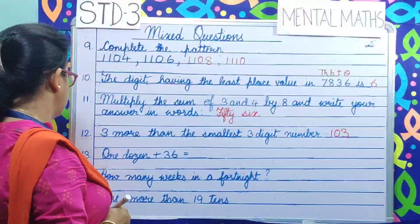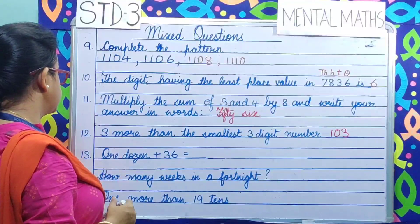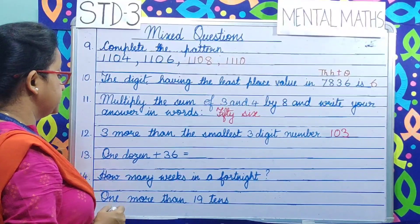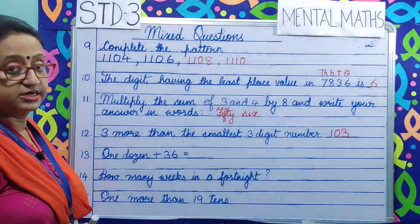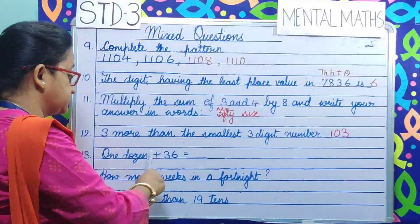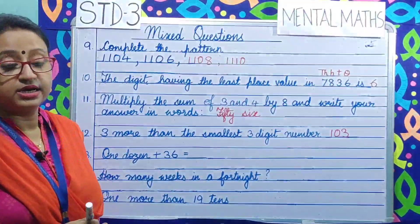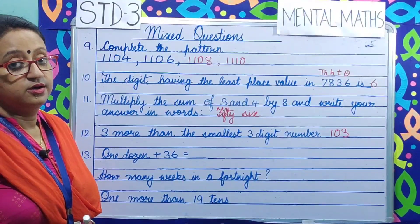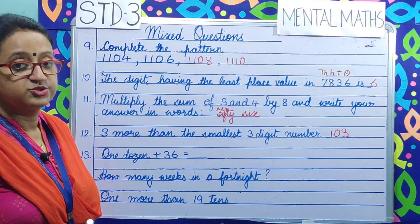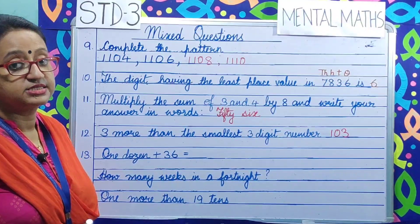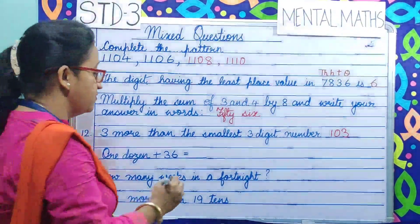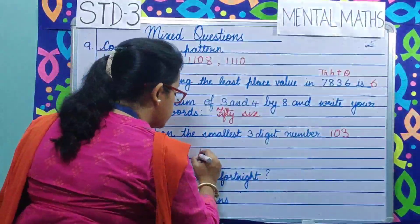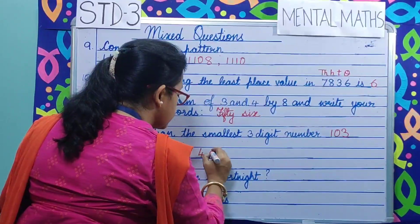Question number 13. 1 dozen plus 36. 1 dozen equals 12, so 12 plus 36 makes it 48.